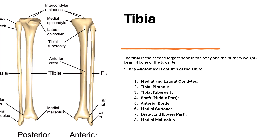The shaft is the middle part of the bone. It features the anterior border — a sharp, prominent ridge that runs down the front of the tibia, often referred to as the shin, which can be easily felt under the skin. You also have the medial surface on the inner side of the tibia, which is also palpable beneath the skin.